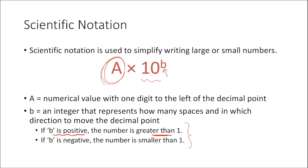If your exponent is negative, that means your number is going to be smaller than one, so you'd move the decimal point to the left. I think this is more intuitive than trying to remember right and left. If it's positive, your number is larger than one, so move the decimal point in the direction that gives you a number larger than one. If it's negative, the number is smaller than one, so move the decimal point to give you a number smaller than one.